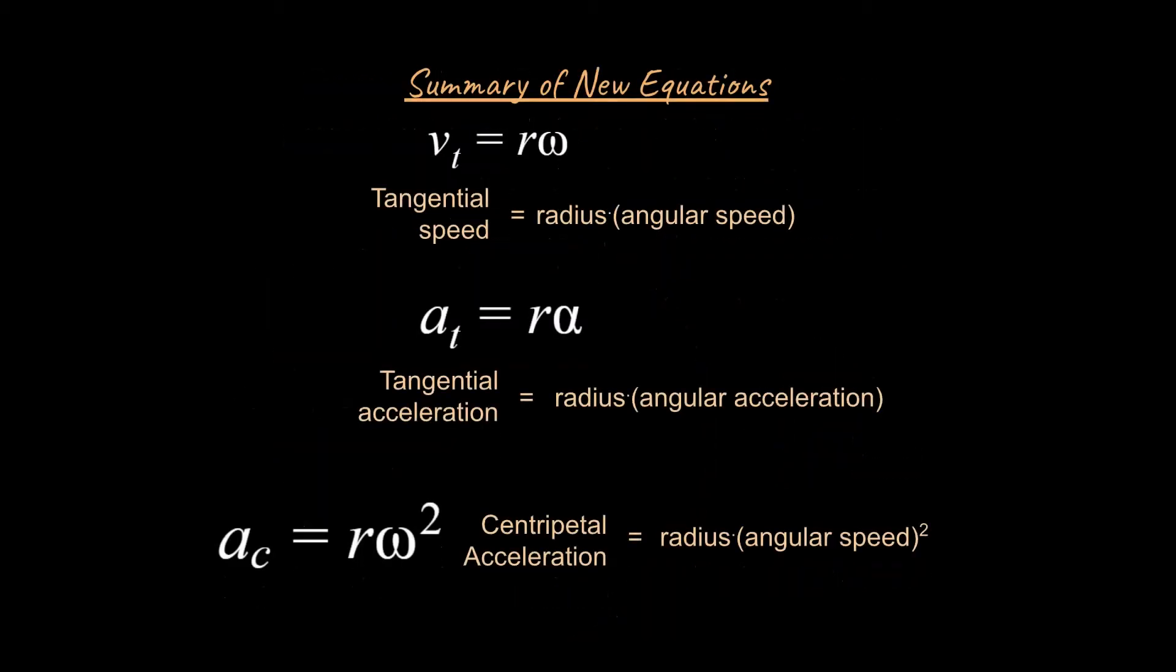And let's see a summary here of some of the equations that we've talked about. So we're going to say tangential speed is equal to the radius times angular speed. Tangential acceleration is equal to the radius times angular acceleration. And centripetal acceleration is equal to radius times angular speed squared. So hopefully this has been helpful.